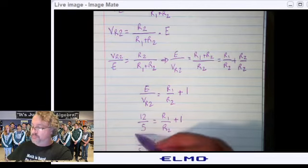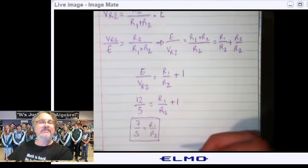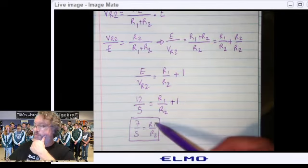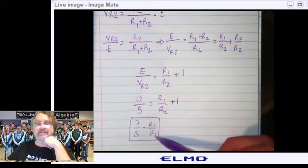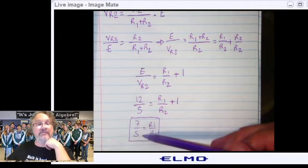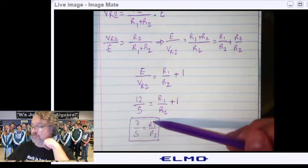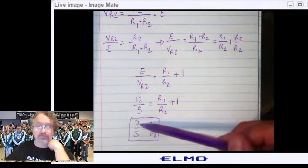So this is a very important result. That gives us the ratio of the resistances needed in order to get 5 volts for VR2. It will also, as a result, give us for VR1, it's going to give us 7 volts.